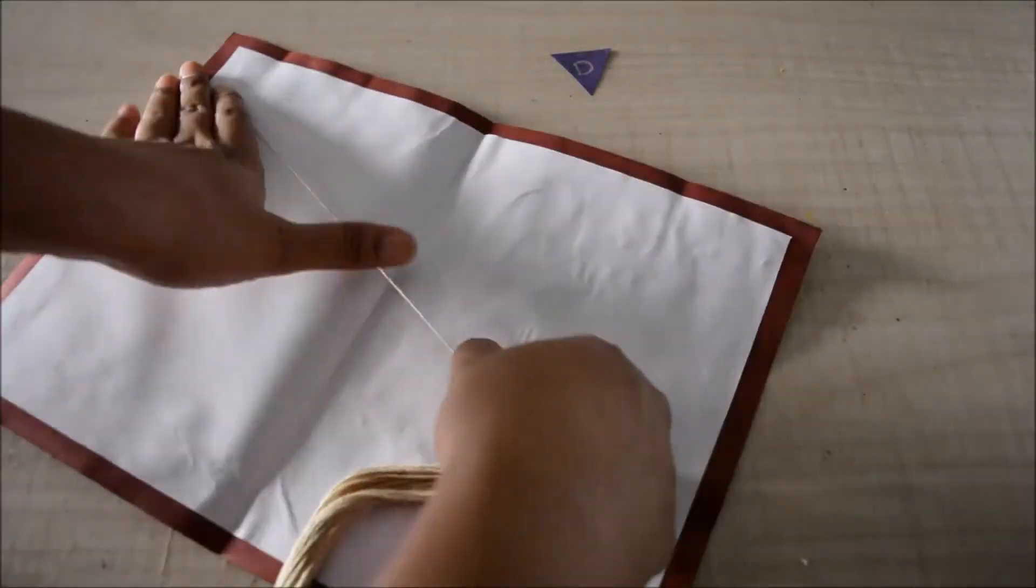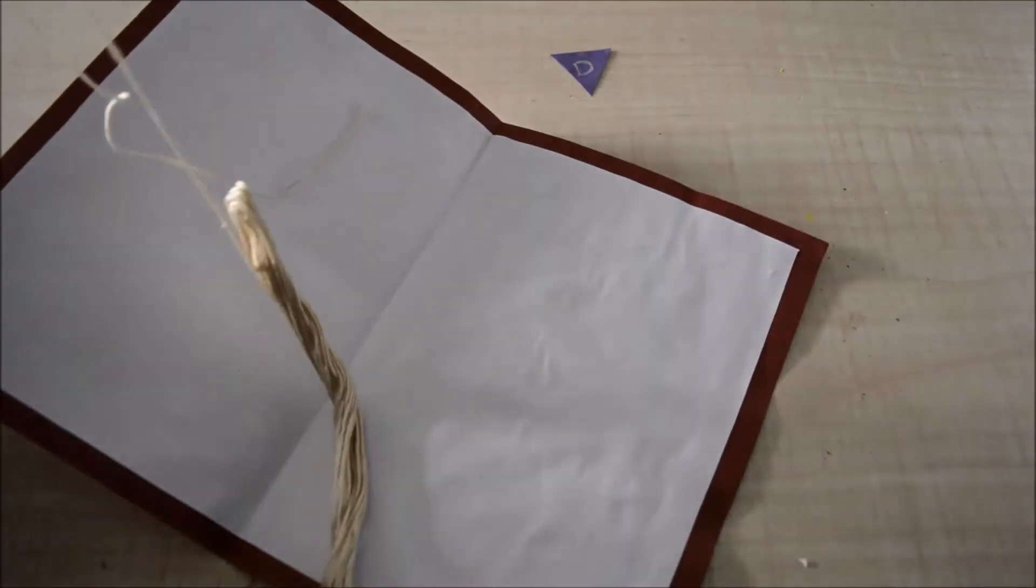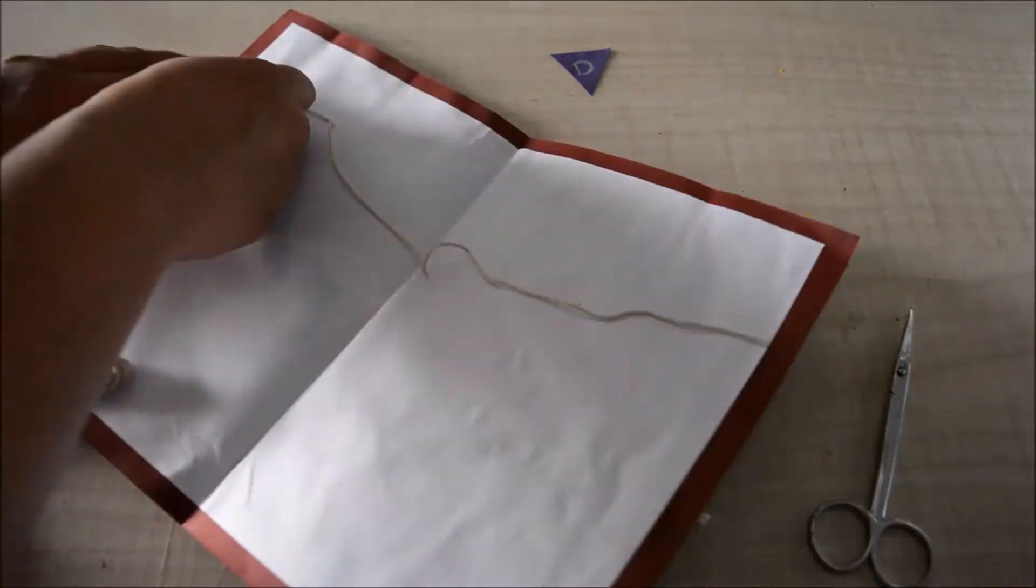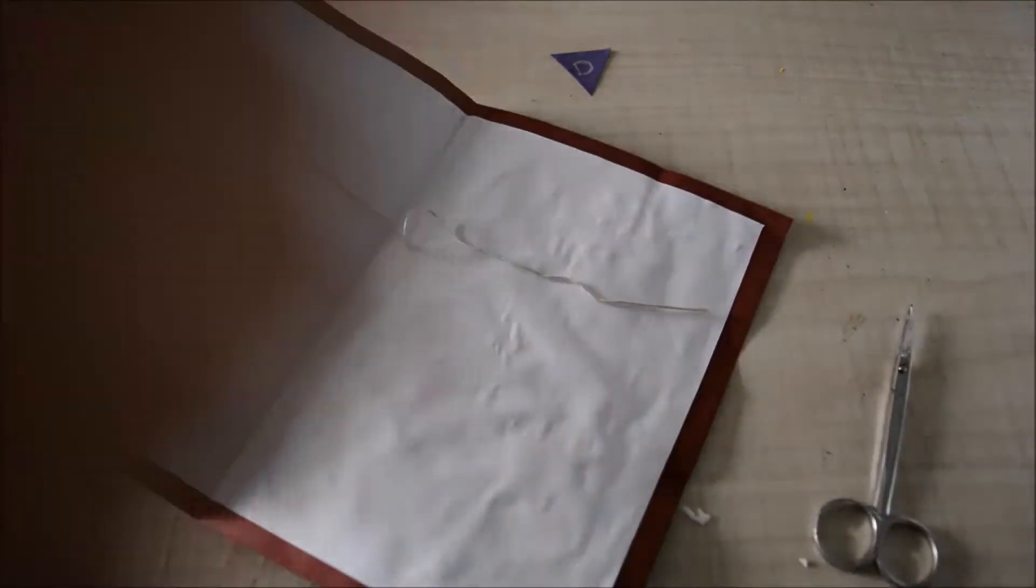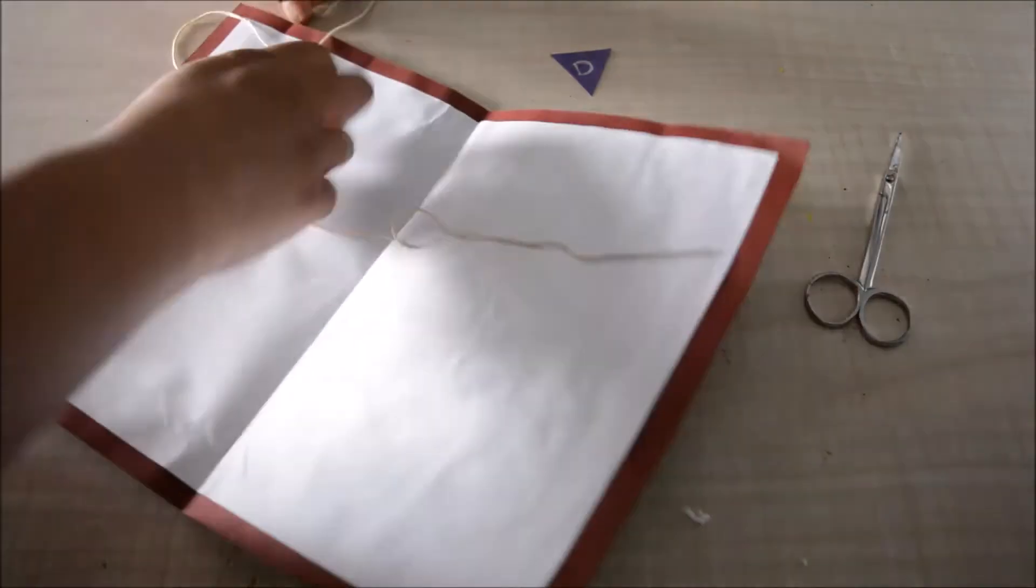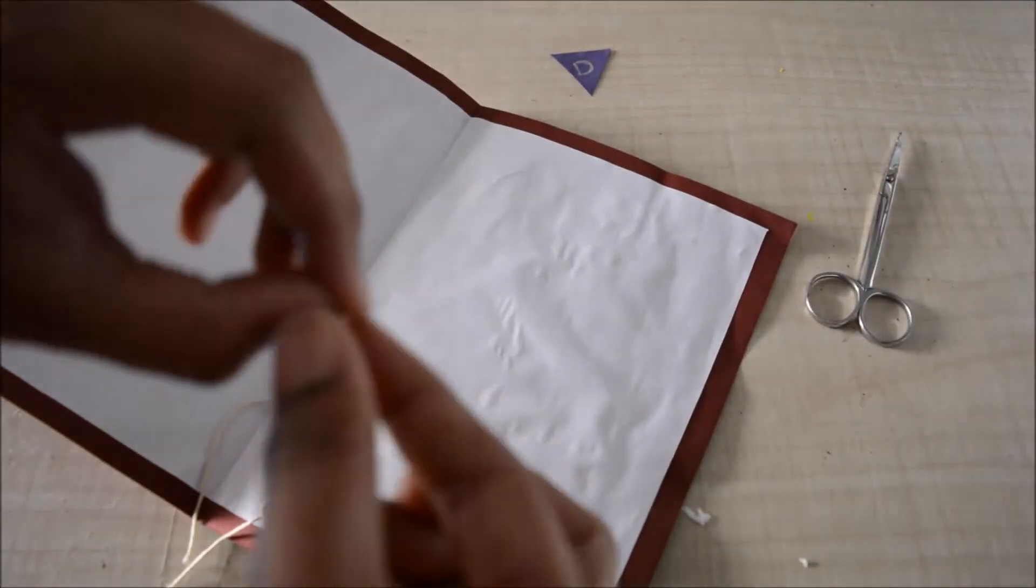Then I'll take a thread and measure it as though it's hanging from the card and cut it. Then I'll cut another piece a bit bigger than the first one. Then I'll tie the two ends of both the threads.